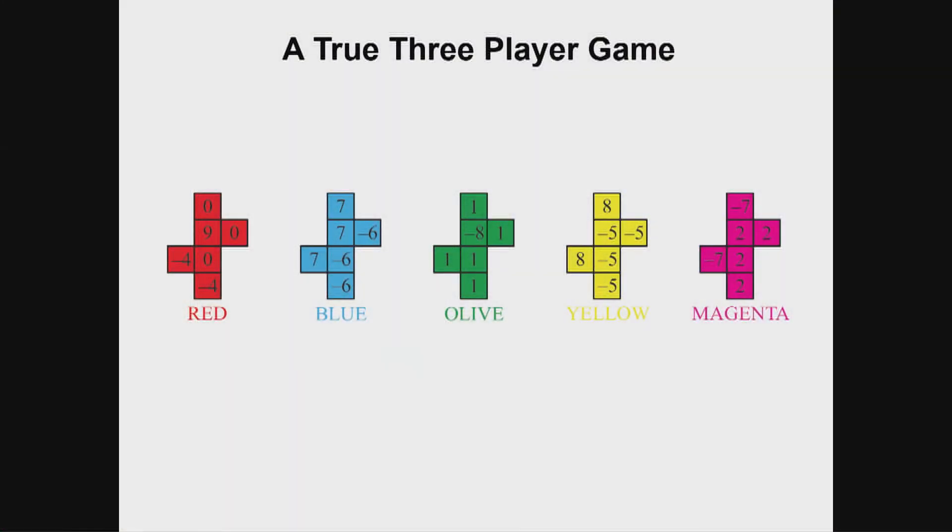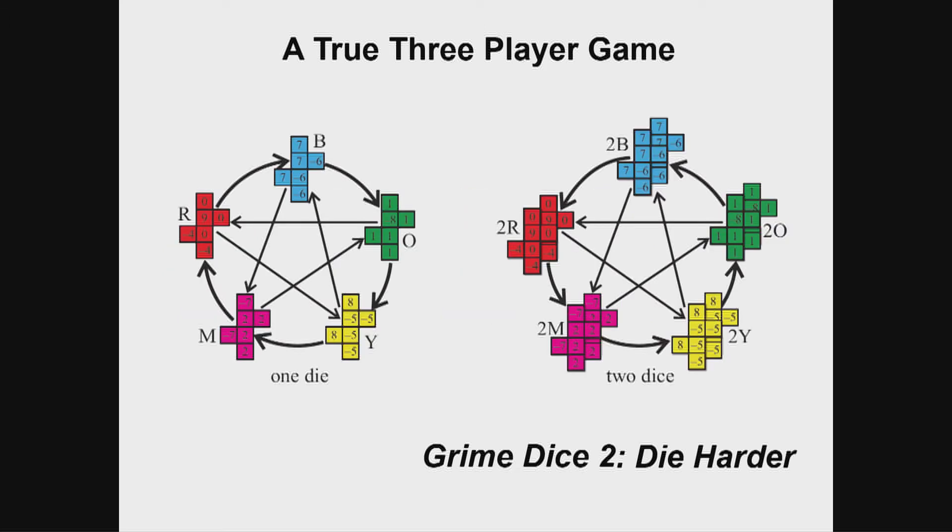Because I like to use single digits, here is that set written using values from minus eight to nine. Here they are. Which we call Grime Dice 2, Die Harder. Here are the probabilities. All the arrows are going in the correct direction.